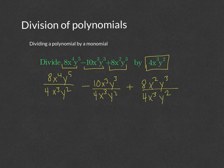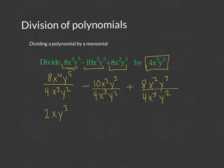Dividing by a monomial is the easiest division of polynomials. So 8 divided by 4 is 2. x to the fourth over x cubed is x. y to the fifth over y squared is y cubed. So the division of the first term simplifies to 2xy cubed.